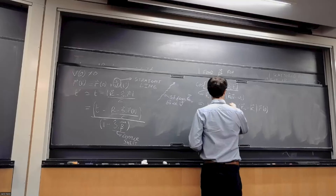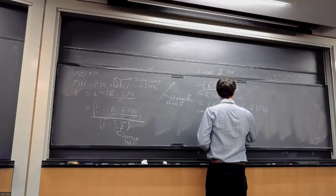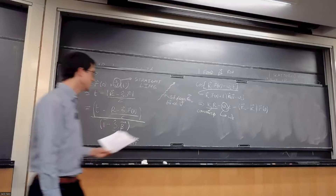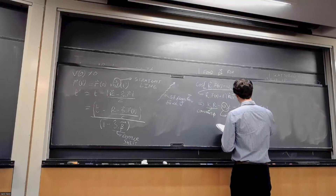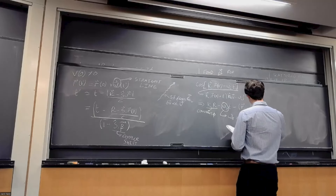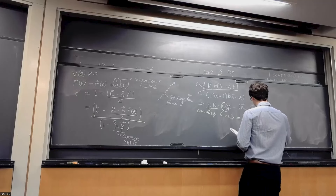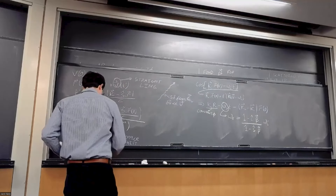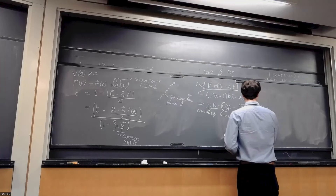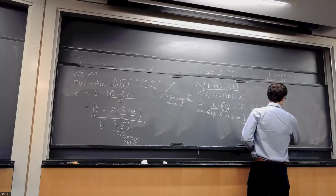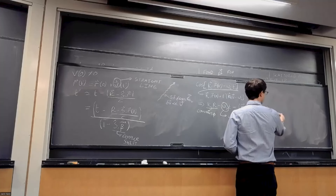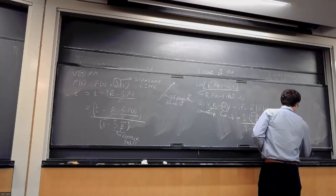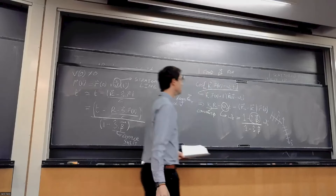The scattered frequency ω_s is equal to [(1 − i-hat · β) / (1 − s-hat · β)] × ω_i. This is interesting because it has two Doppler shifts inside it: one Doppler shift due to the incoming light being Doppler shifted by the particle's motion — the particle sees a different frequency of the incoming light — and then the particle scatters that light in some other direction, which is Doppler shifted again to the observer. So we get two Doppler shift factors.